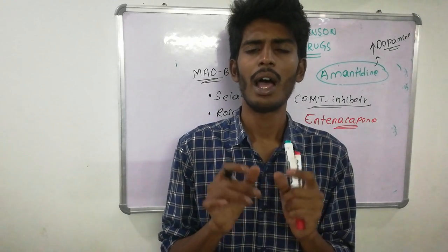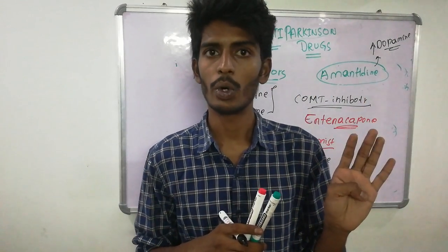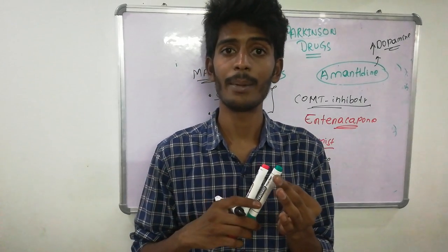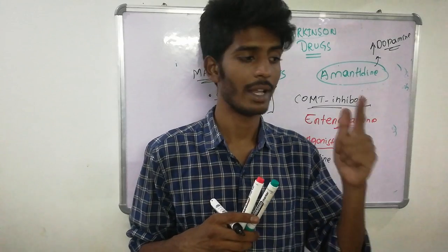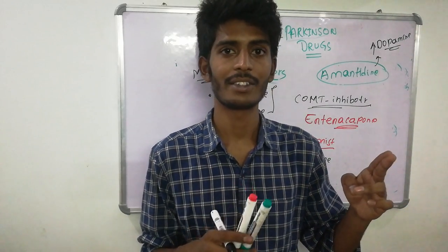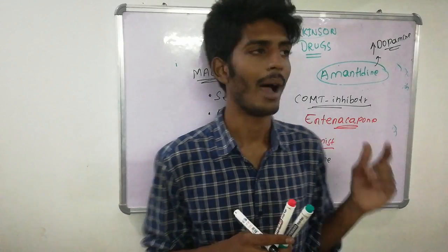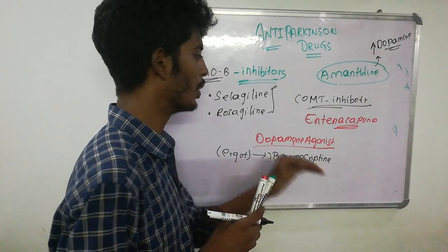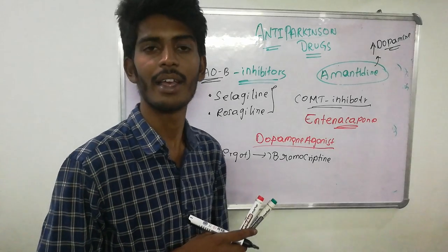To summarize: our target is to increase dopamine. Dopamine cannot cross the blood-brain barrier, so we give levodopa; to prevent peripheral metabolism, we add carbidopa — this combination is preferred in elderly patients. We also have MAO-B inhibitors, COMT inhibitors, dopamine agonists like bromocriptine, and amantadine — an antiviral drug that is also an approved treatment for Parkinson's. Thank you guys, keep watching.